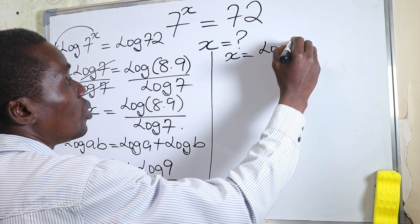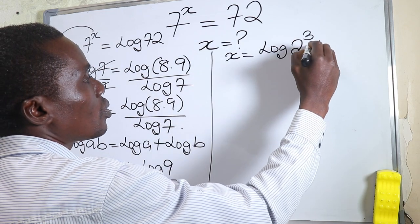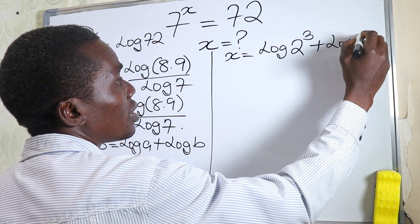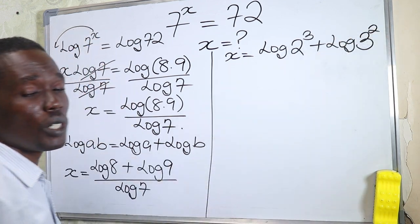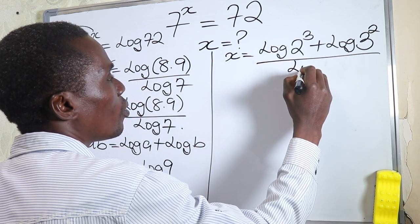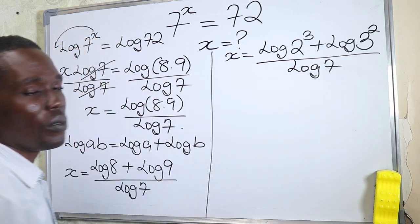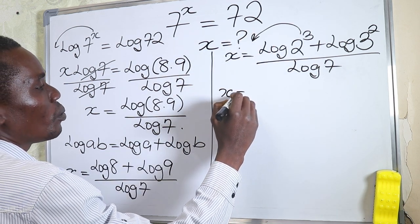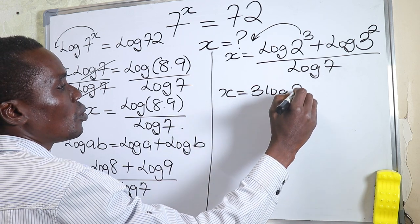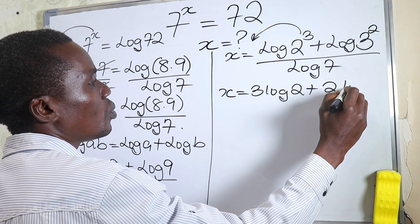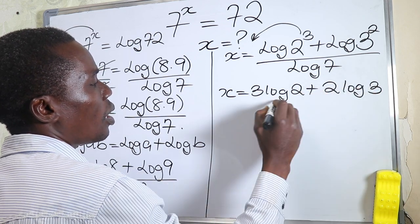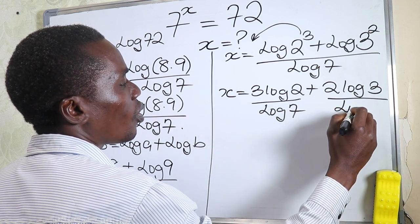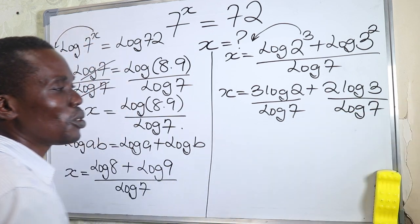So log of 8 is log of 2³ and log of 9 is log of 3². So x equals log(2³) plus log(3²), all divided by log 7. According to the law of indices, the exponents come over, giving us x equals 3·log 2 plus 2·log 3, all divided by log 7.